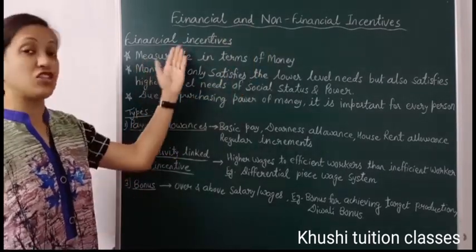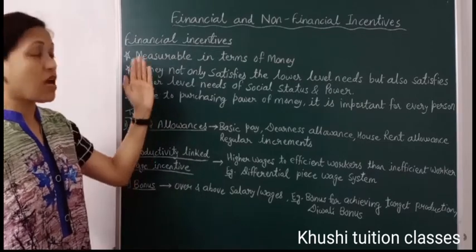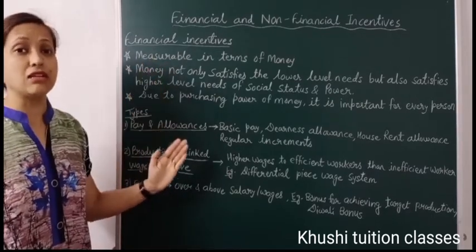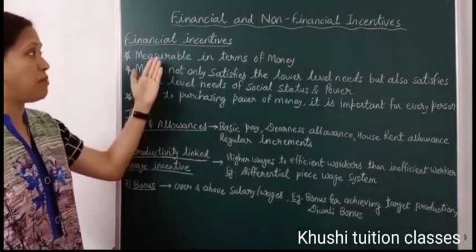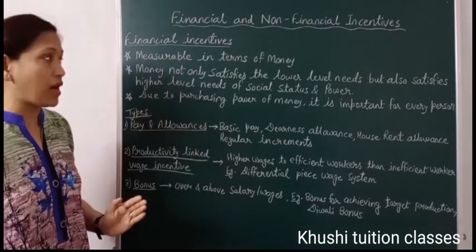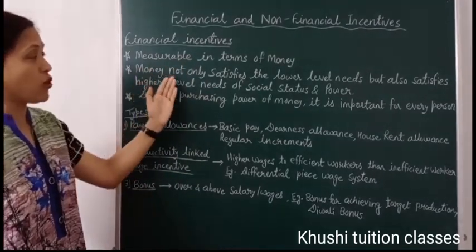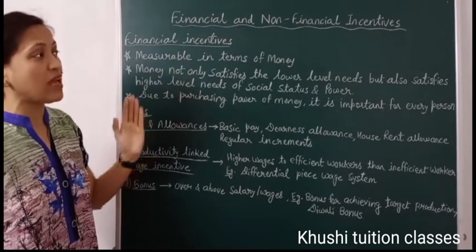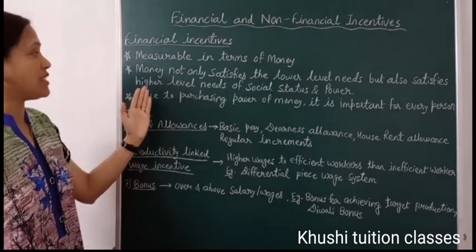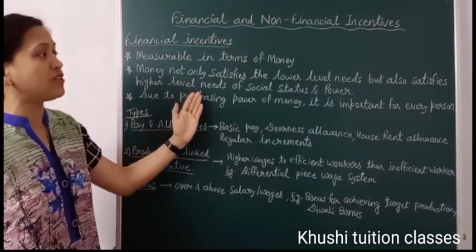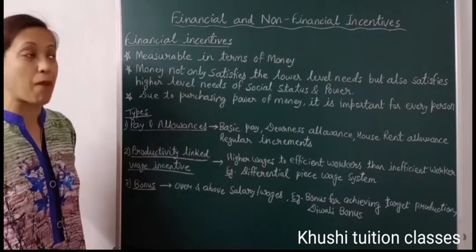First we learn financial incentives. These are the measures which can be measured in terms of money. Money not only satisfies the lower-level needs but also satisfies higher-level needs of social status and power.